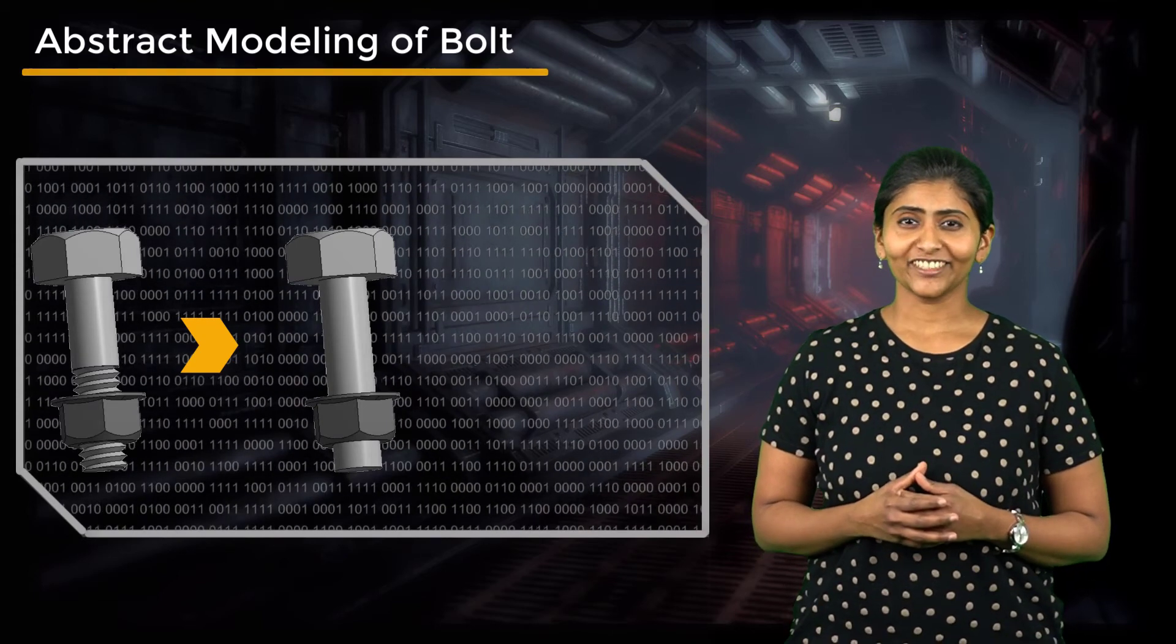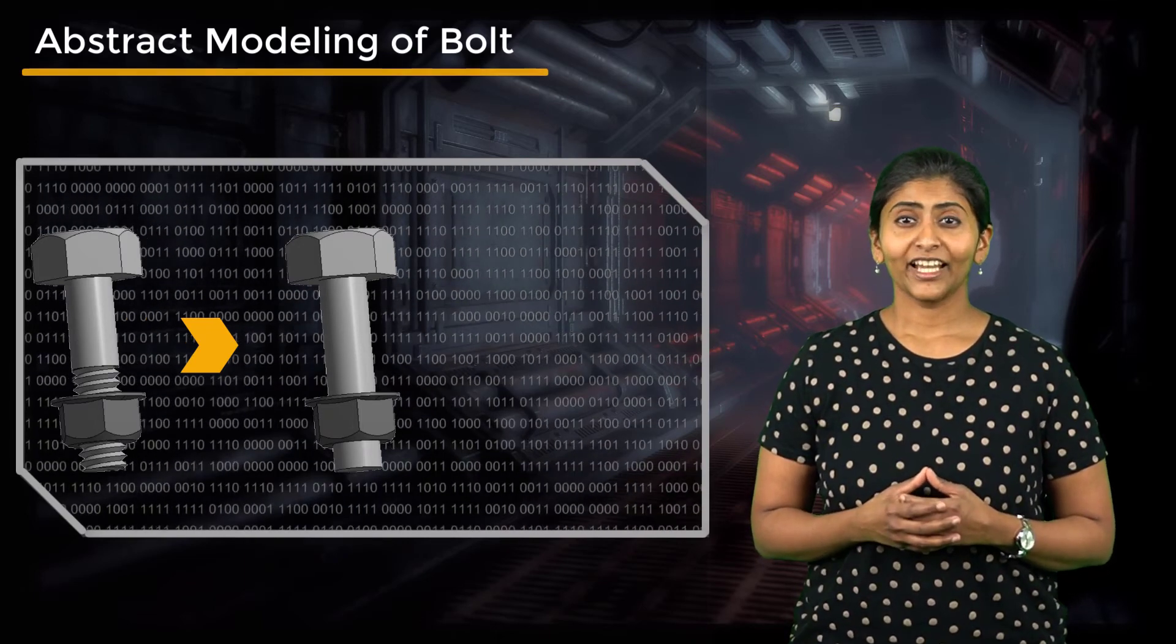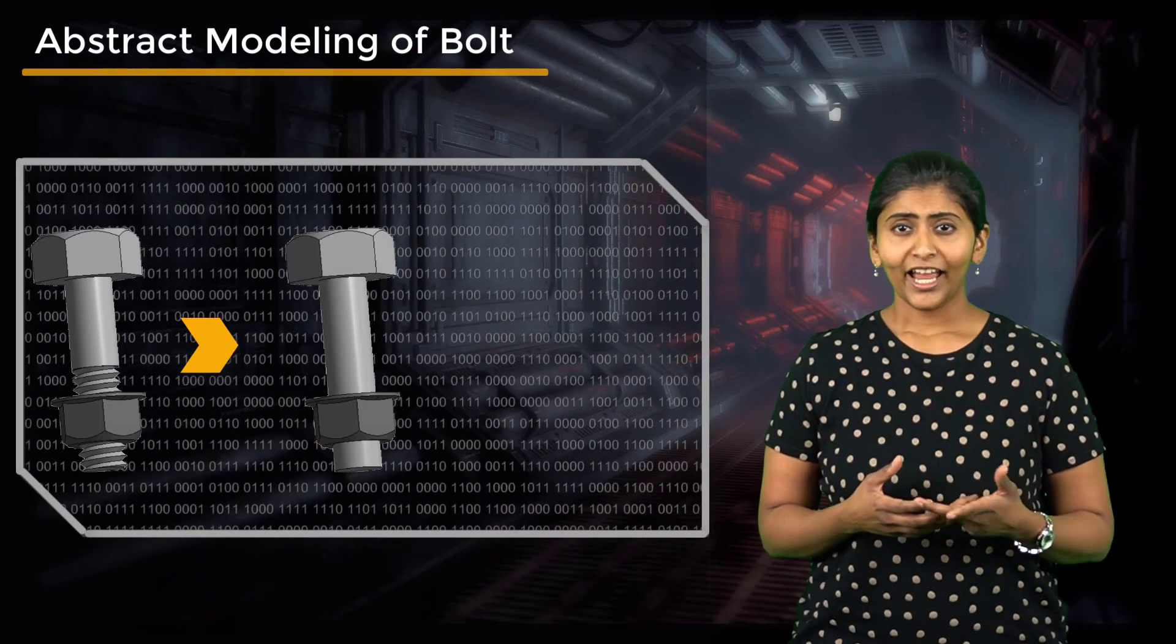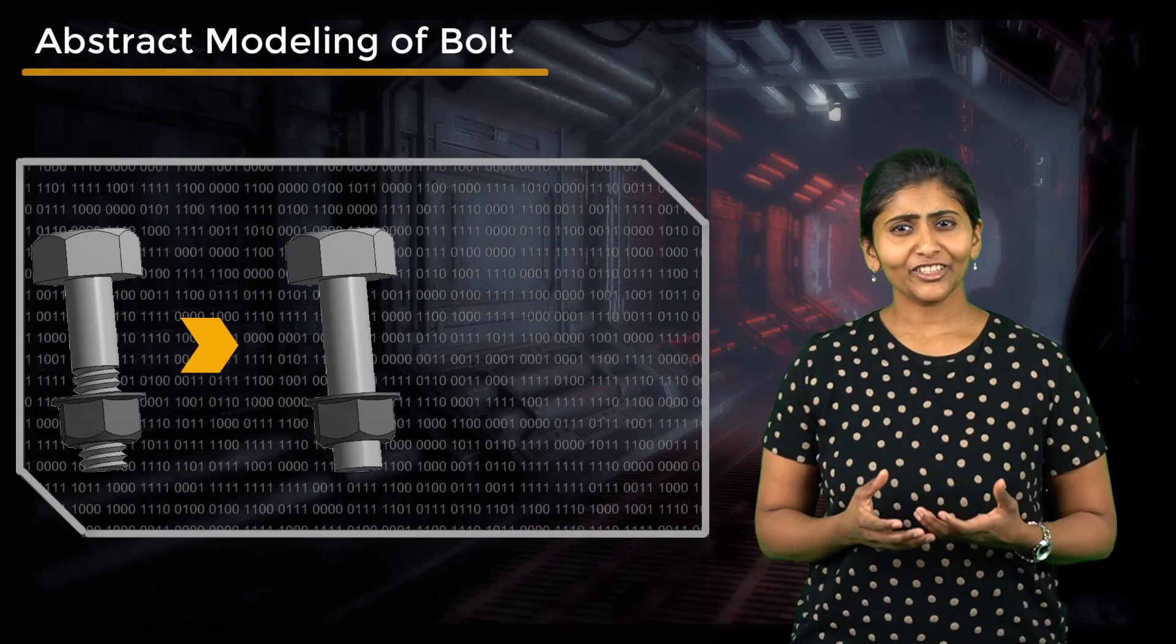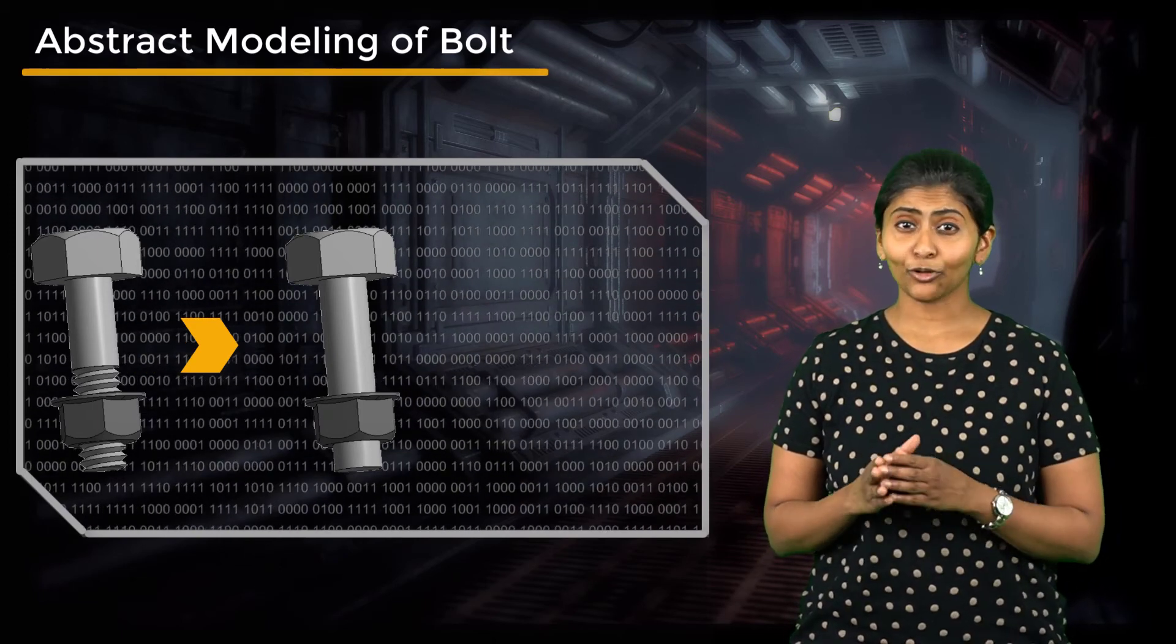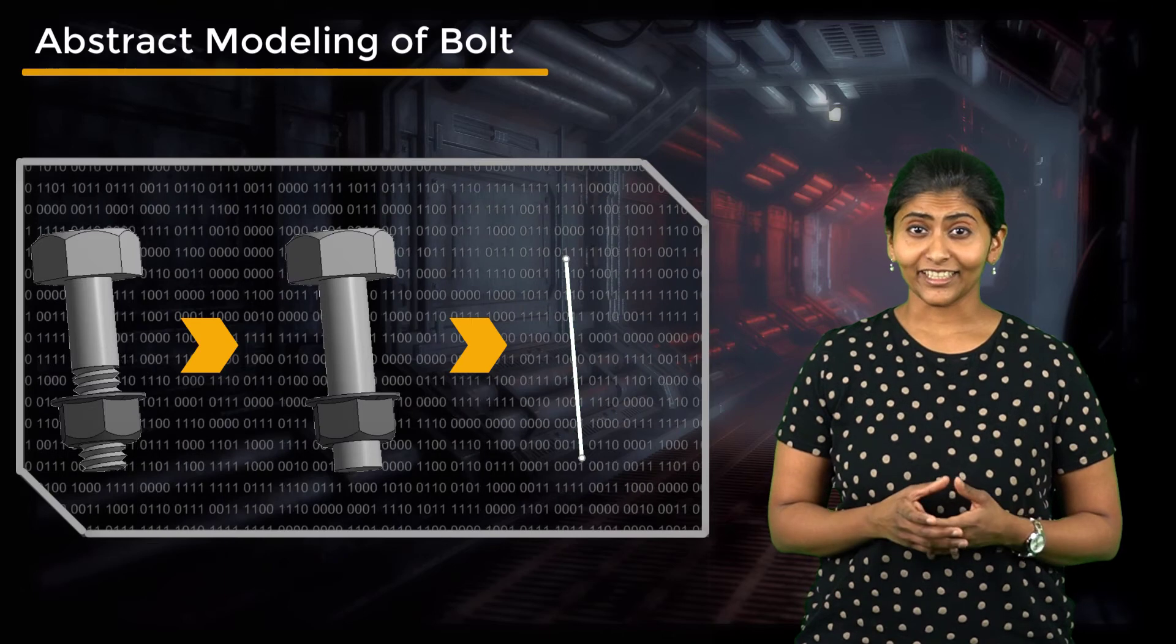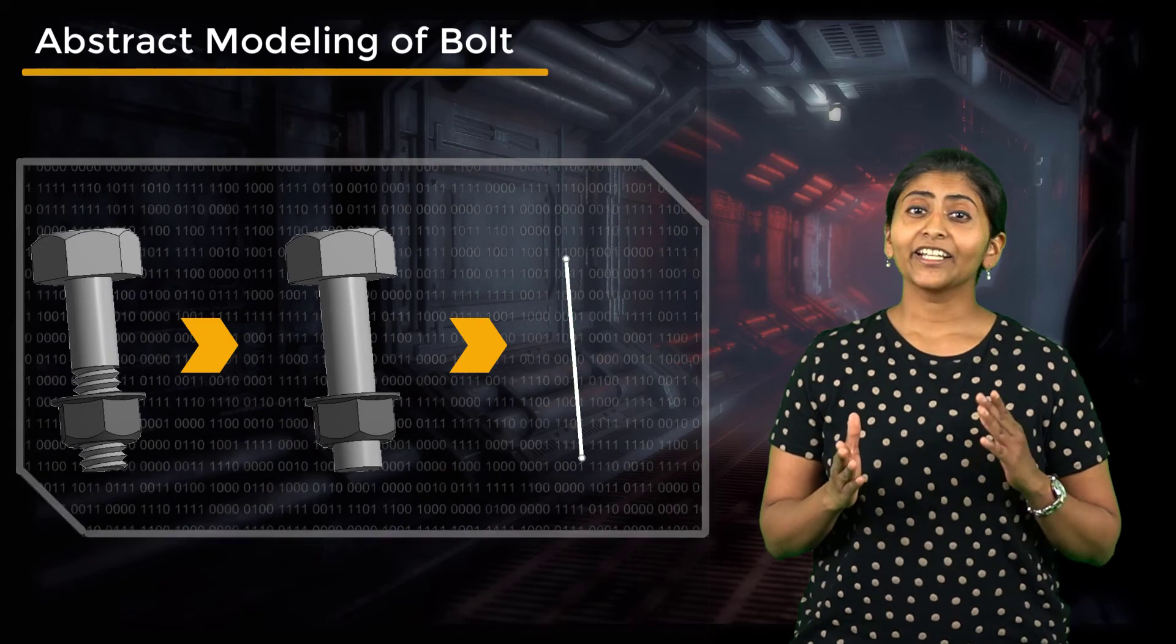In some simulations, the bolts are only required in order to generate preload. In such cases, we can remove the bolt head, the nut and the extra length of the bolt and represent the bolt as a simple cylinder. We can further simplify the bolt by replacing the solid cylindrical body with a line body. Again, in such cases, bonded or MPC contact is used between the line body and the plate hole.